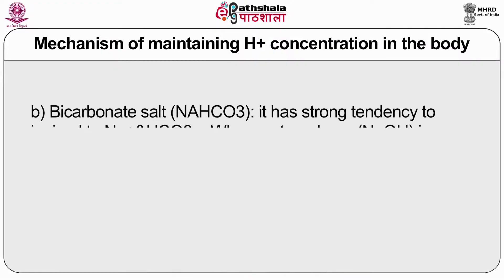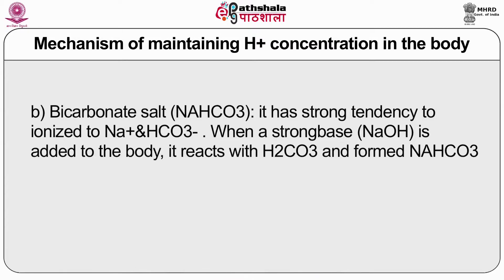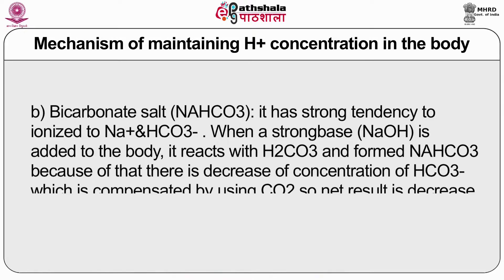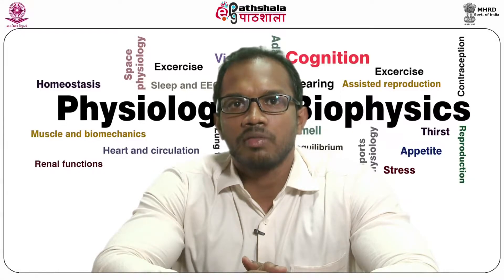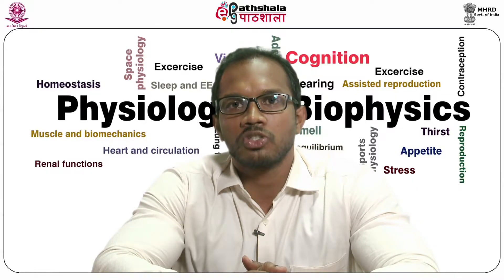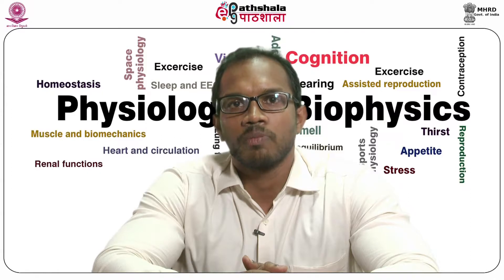The second buffer is the bicarbonate salt, which has a strong tendency to ionize into sodium ions and bicarbonate ions. When a strong base is added to the body, it reacts with H2CO3 and forms NaHCO3. This causes a decrease in the concentration of H2CO3, which is compensated by using carbon dioxide. The net result is a decrease in CO2 in blood, which leads to decreased respiration. Before discussing acid-base balance, we discuss the Henderson-Hasselbalch equation, by which the pH of a solution can be derived if the concentration of bicarbonate and the partial pressure of CO2 are known.